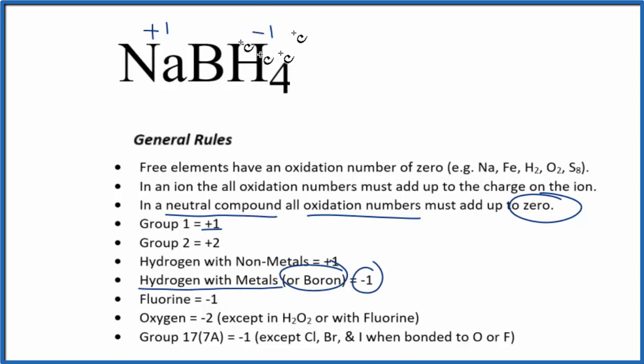So we have four of these -1 hydrogens. For boron, let's call that X, because now we have enough information to figure out its oxidation number.